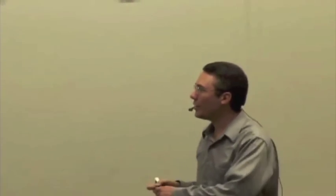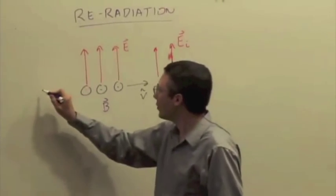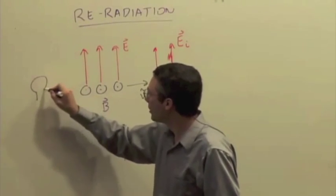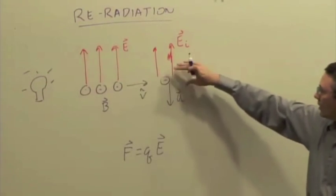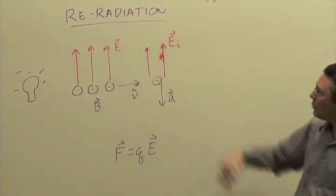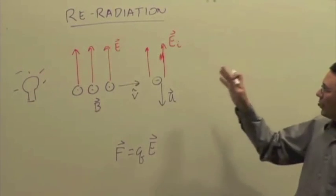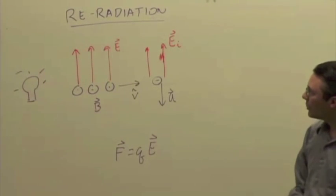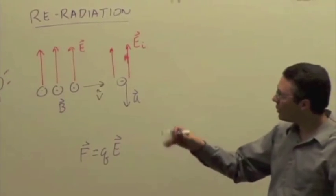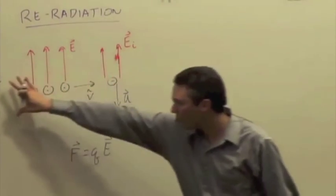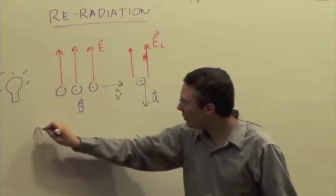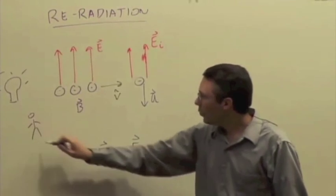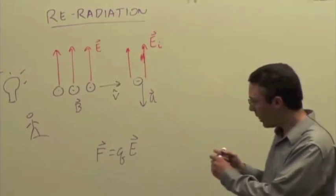This electron, so here's the light source. Here's a light bulb or something, emitting light. And that light comes in, causes charges in some object to accelerate. Those accelerated charges are going to emit radiation in all directions, including back toward the original source or down this way or up that way. So if we're standing here, we would see re-radiation.